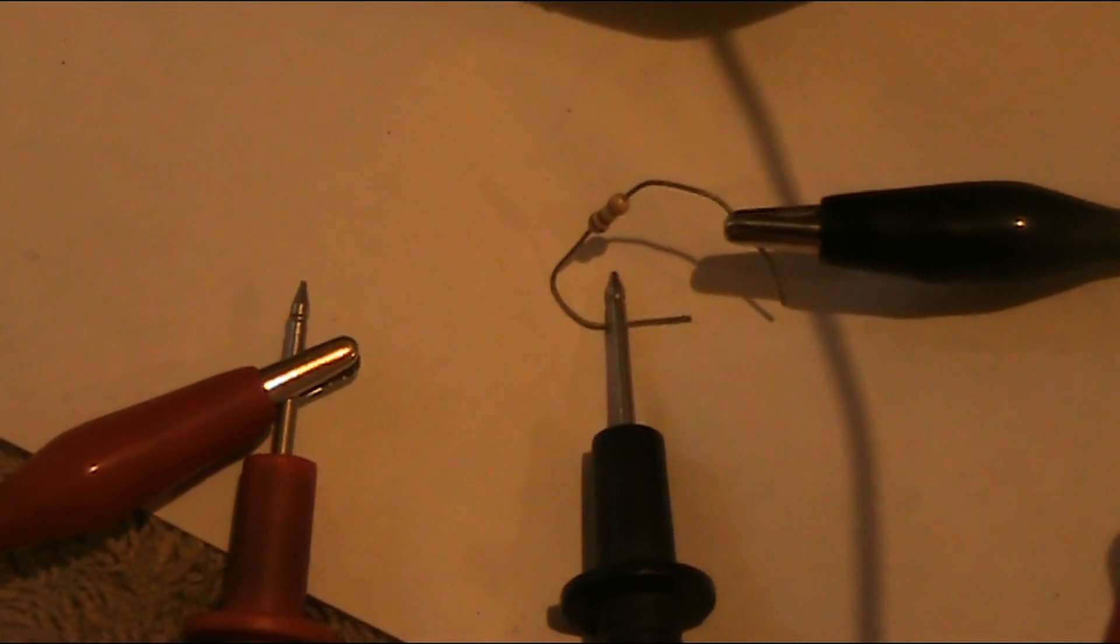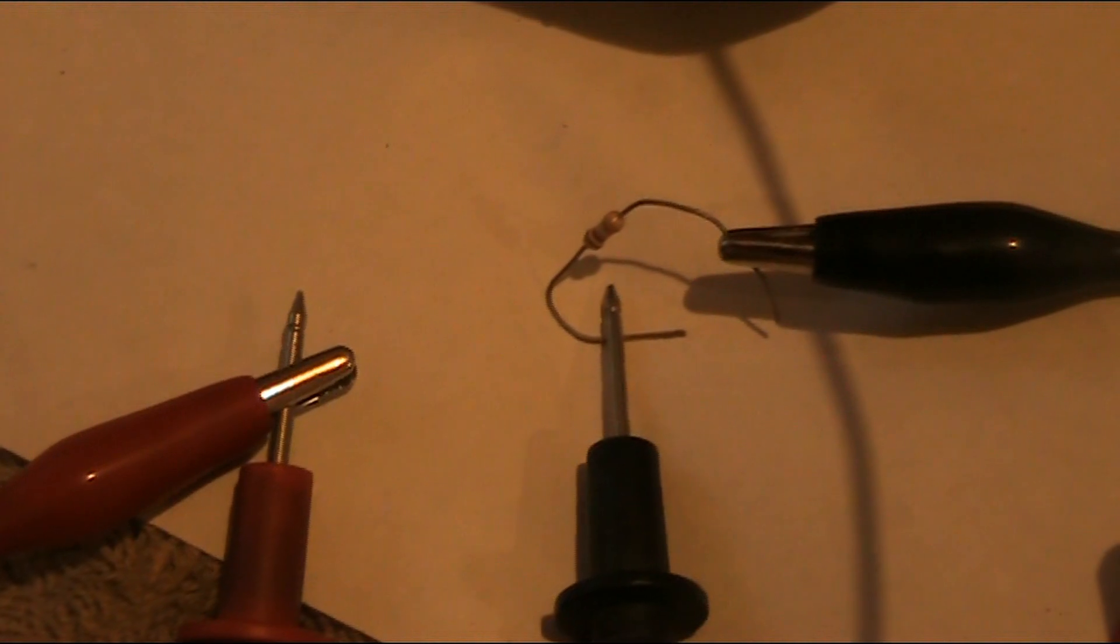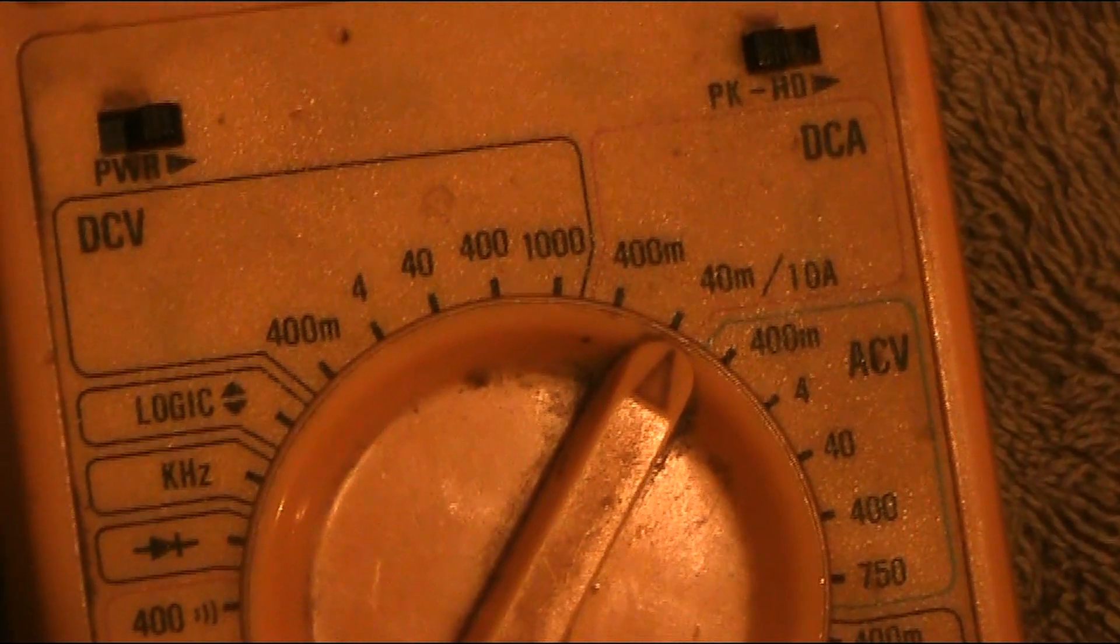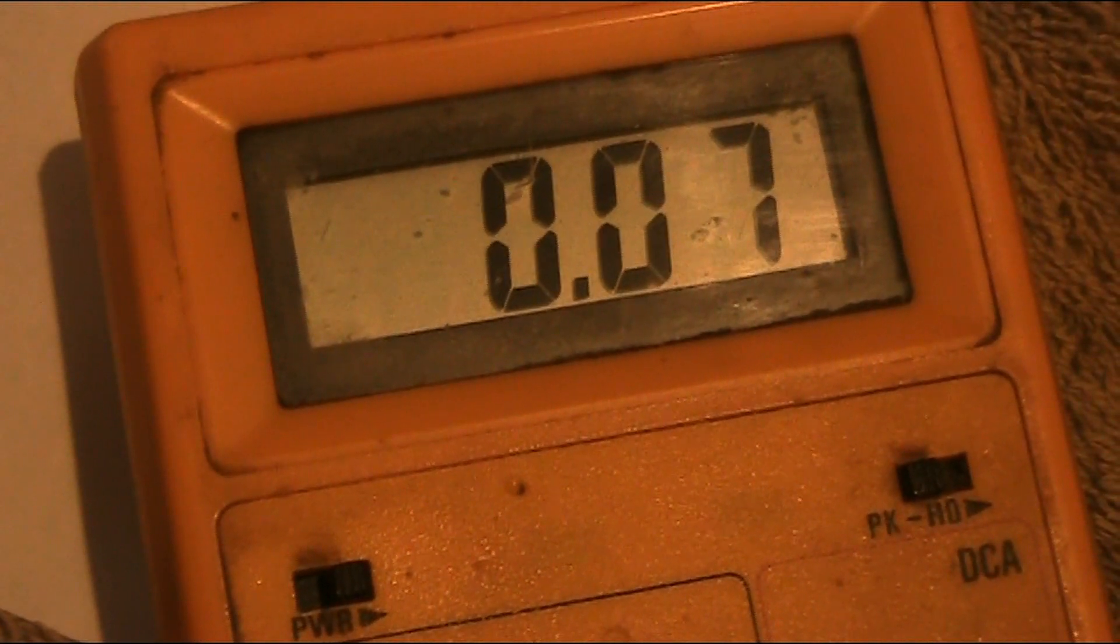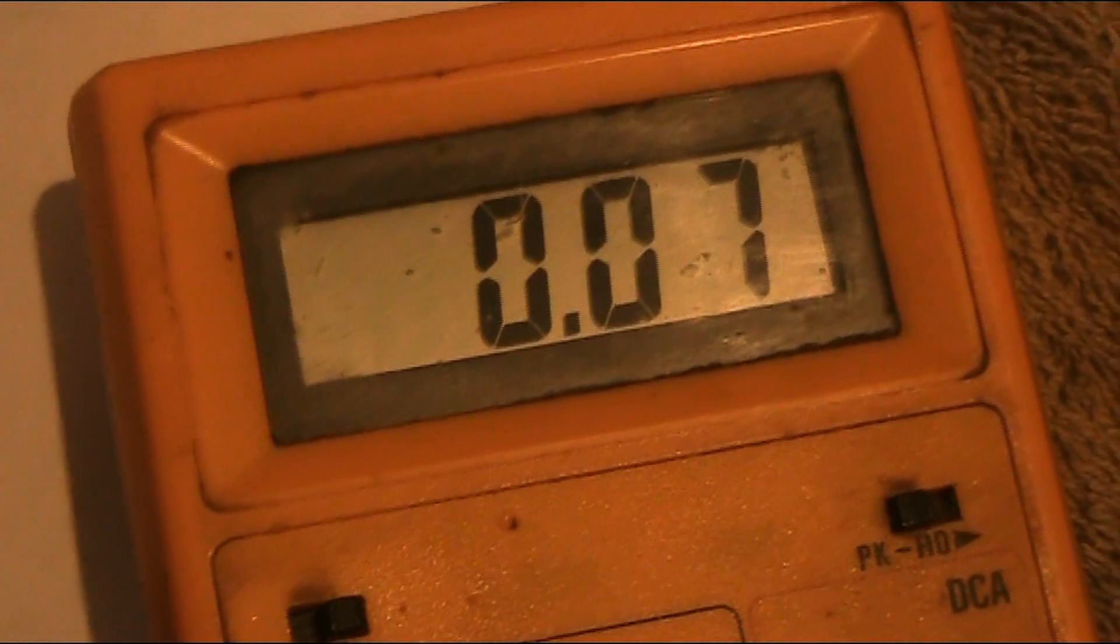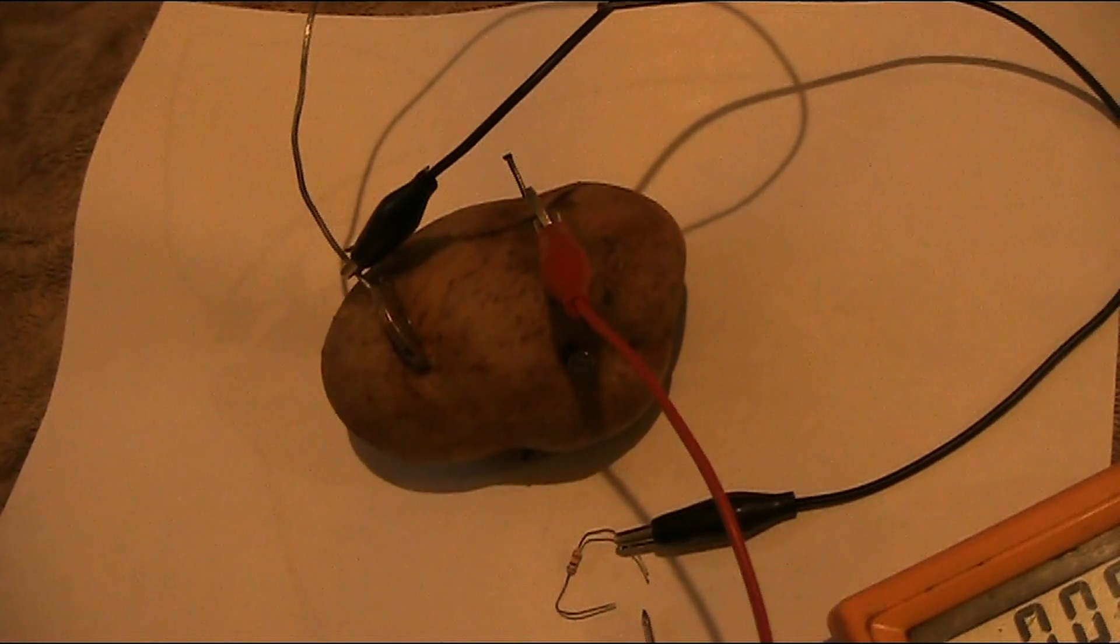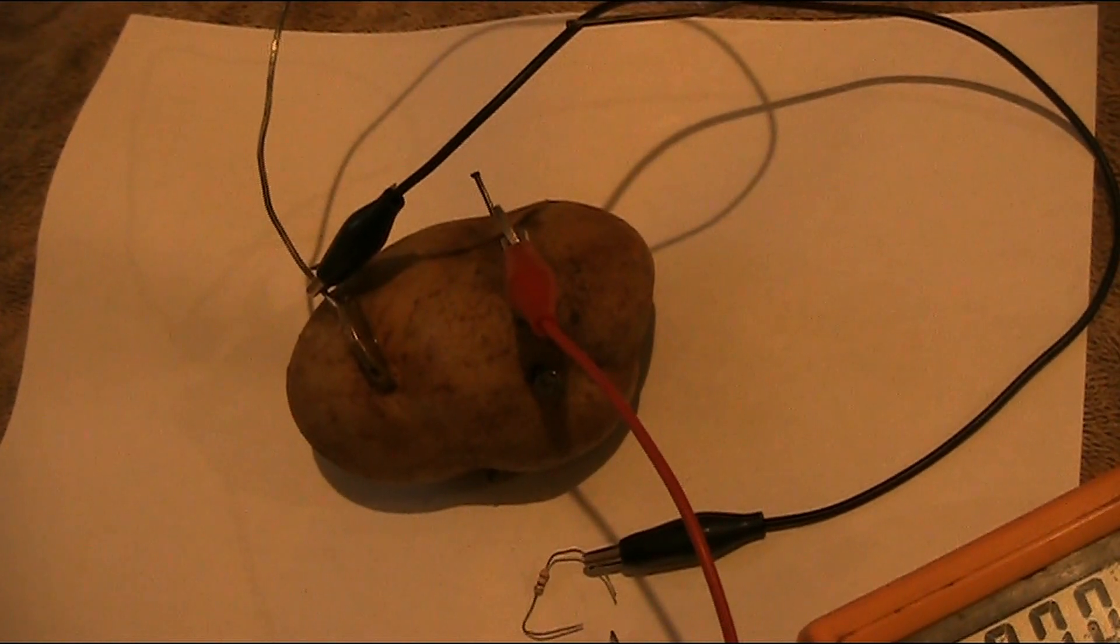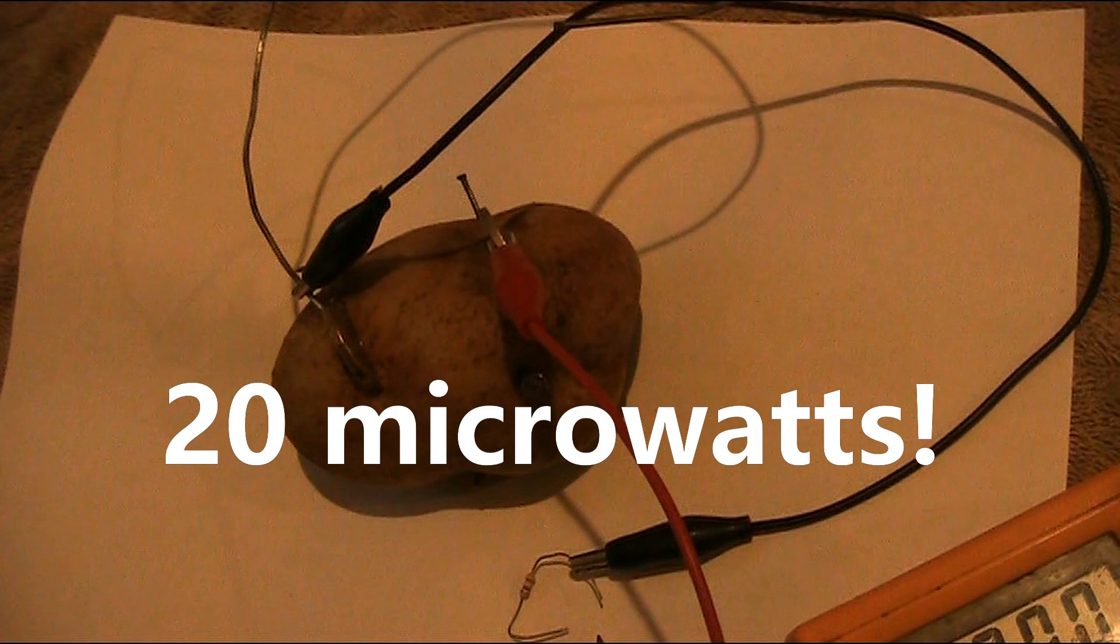Because I'm measuring current, I've had to change the position of the leads and the resistor. I've got the ammeter in series with the resistor, not across. And I've got a 40 milliamp maximum scale. And I'm getting 0.07 of a milliamp, or 70 microamps. Now if we multiply the 70 microamps with the 0.3 of a volt approximately, the power is tiny - milliwatts, maybe even microwatts.